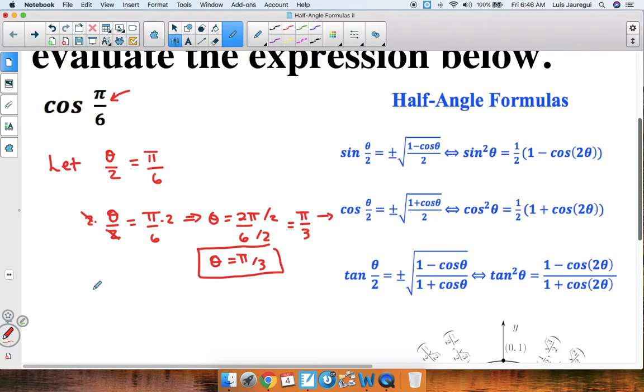So now that we have determined that, let's evaluate cosine of pi over 6. Cosine of pi over 6 is equal to the positive square root of 1 plus cosine of theta over 2. So we write here 1 plus cosine of theta, which is pi over 3, divided by 2.